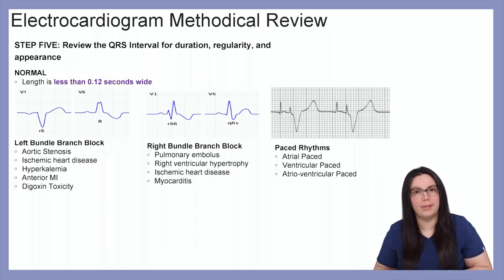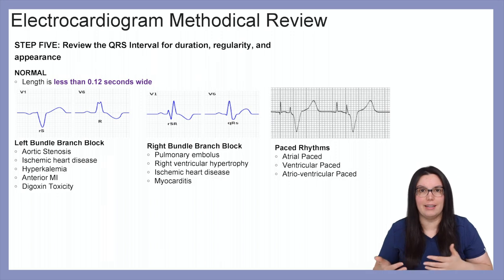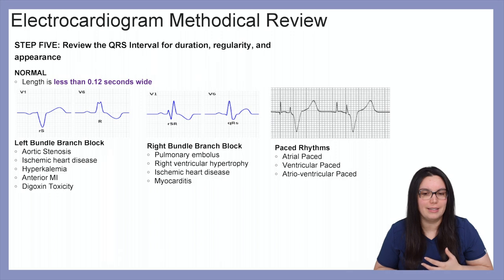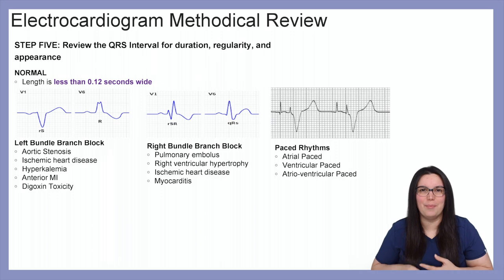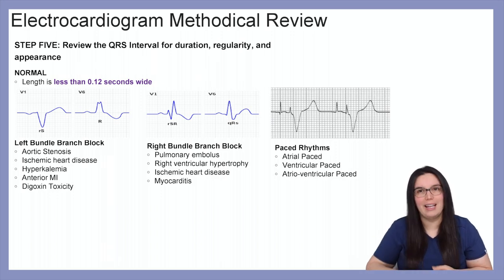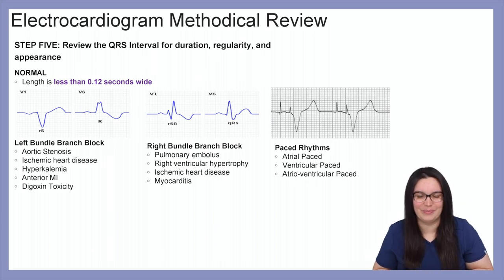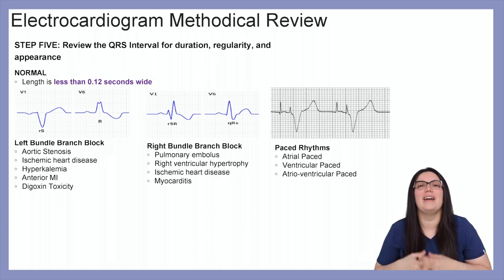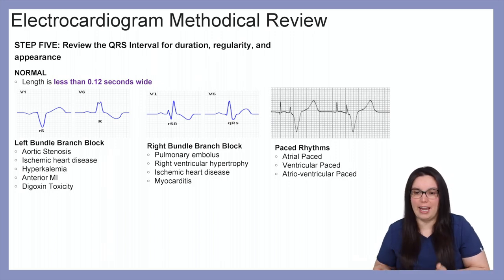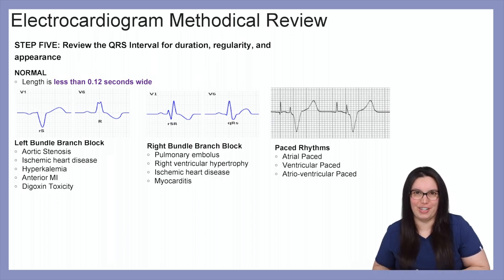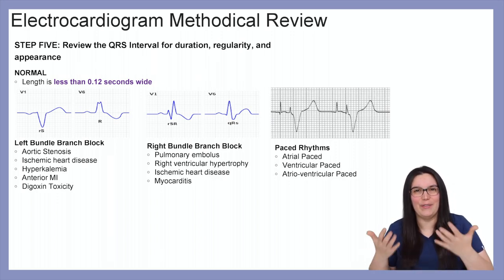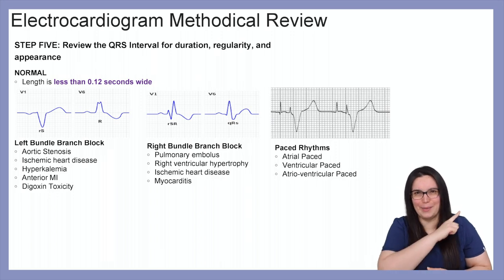With a right bundle branch block, you'll see a biphasic deflection. Causes include pulmonary embolus, right ventricular hypertrophy, ischemic heart disease, and myocarditis. If you need help reviewing bundle branch blocks, a link is provided for reference. Paced rhythms can be atrial paced, ventricular paced, or atrioventricular paced — a link is also provided to review those.